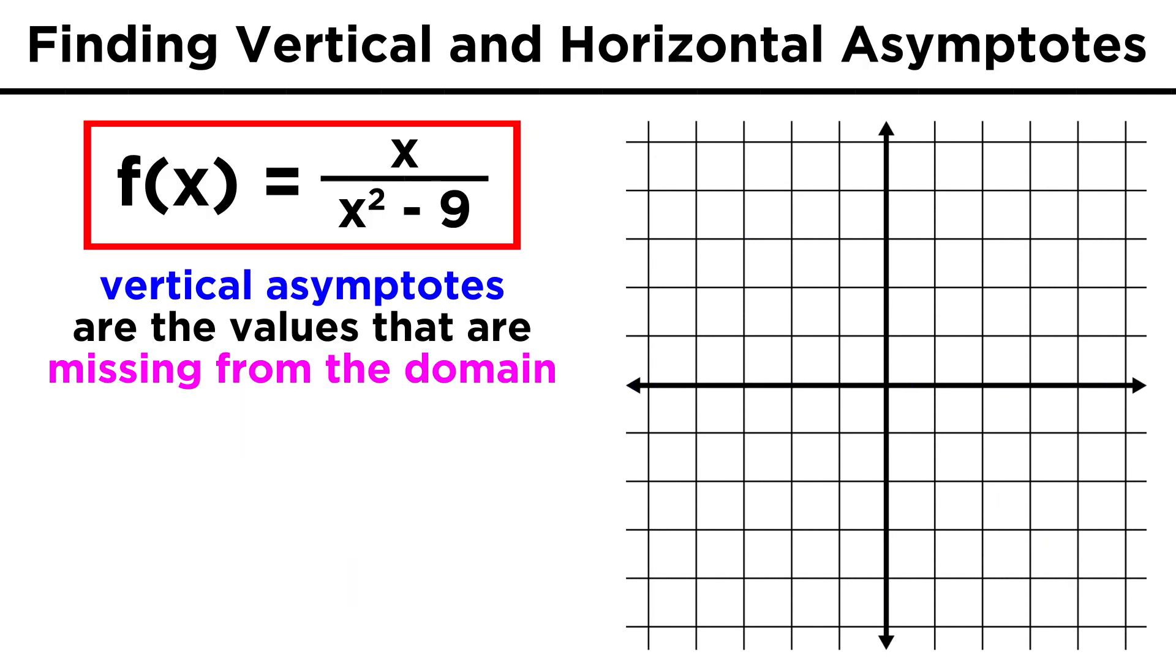Finding vertical asymptotes is pretty simple, as these are values that are not in the domain of the function. That means that these are the zeros of the denominator.